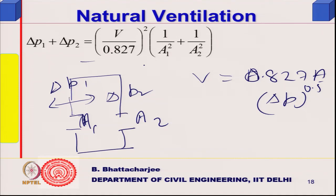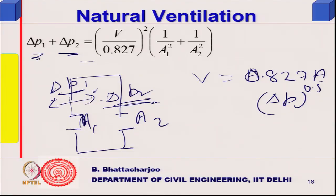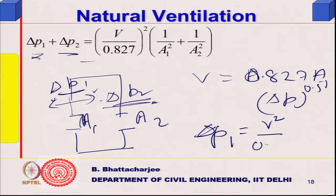Looking back: pressures can be summed because the inside pressure is assumed constant. The flow through both openings is the same — whatever comes in must go out. So delta P1 equals v-squared divided by (0.827-squared times A1-squared).